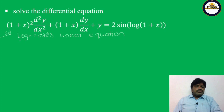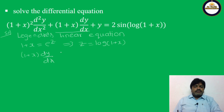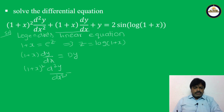The suitable substitution here: since we have (1+x), we put 1+x = eᶻ, so z = log(1+x). Now, (1+x) dy/dx: here A = 1, so we get 1·Dy = Dy. For the second term, (1+x)² d²y/dx²: again A = 1, so we get D(D−1)y. On the right-hand side, 2 sin(log(1+x)) becomes 2 sin z, since log(1+x) = z.